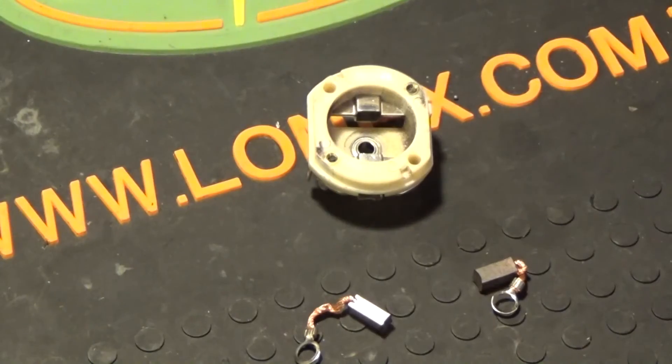Above the commutator is the end bell, which houses the brushes. The brushes act as a bridge for electricity between your motor contacts on your wire harness to the commutator on the armature. Some motors have vertical brushes, others have horizontal. These brushes are horizontal.